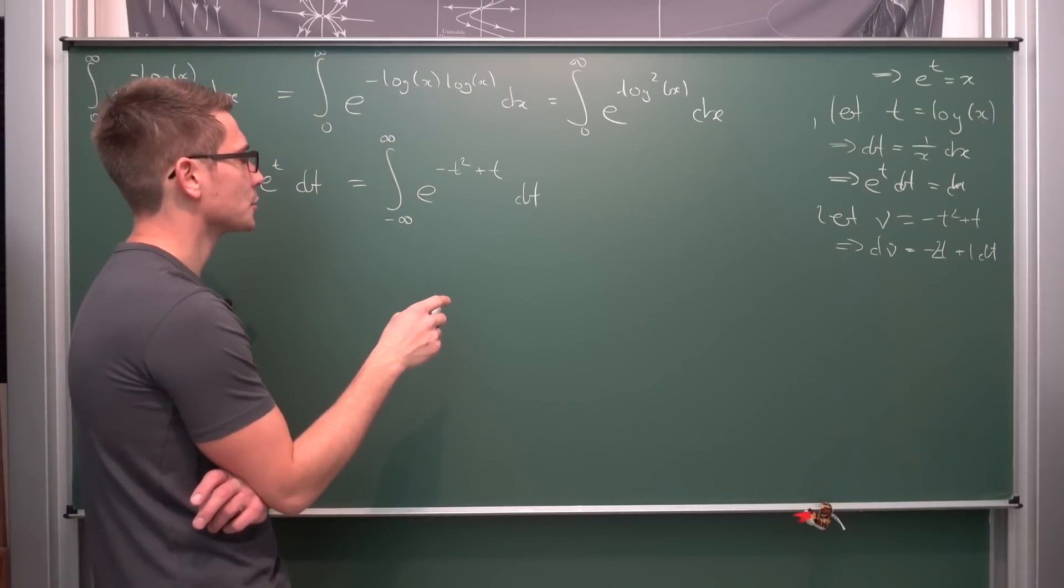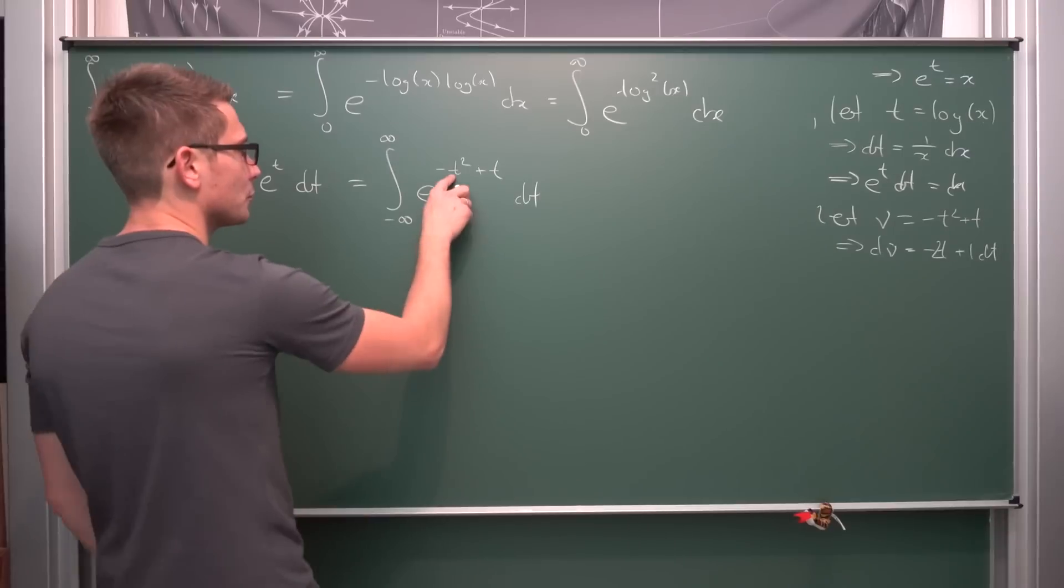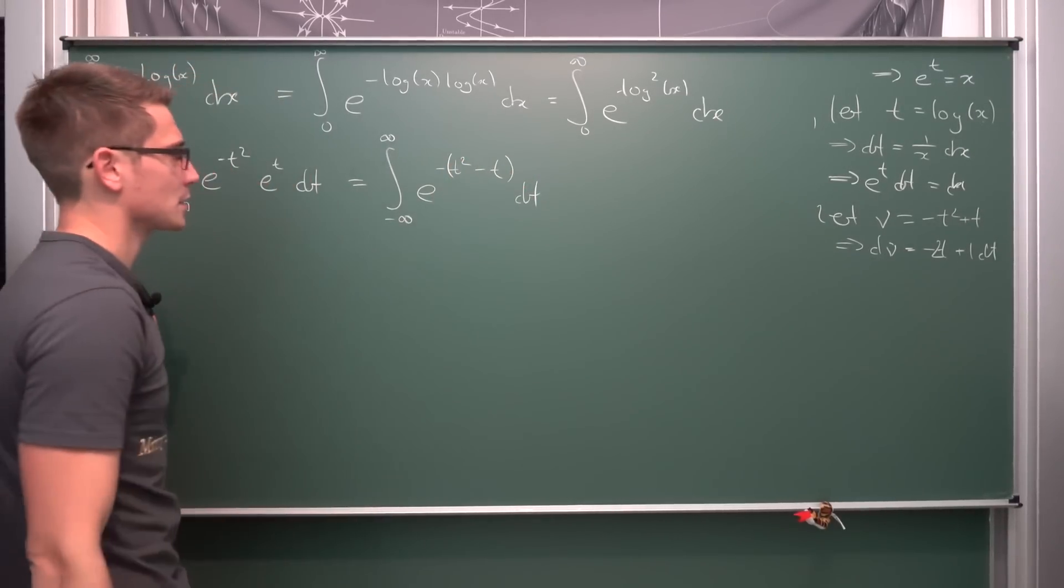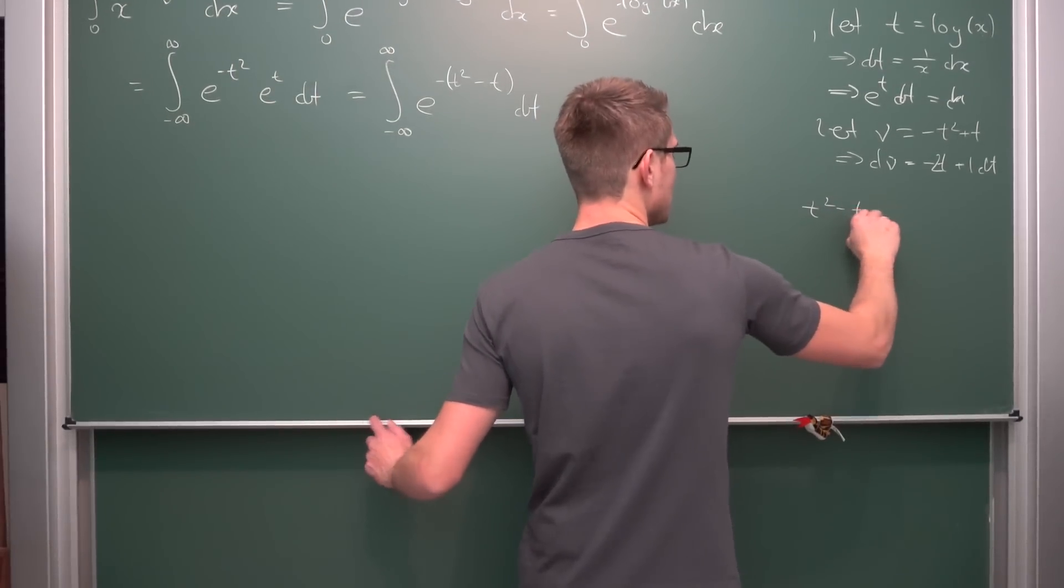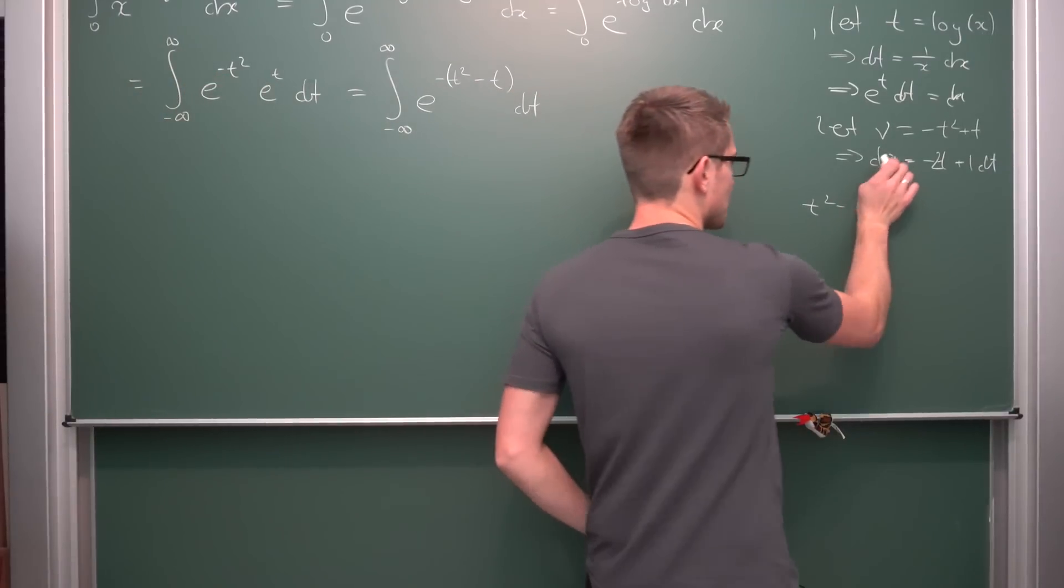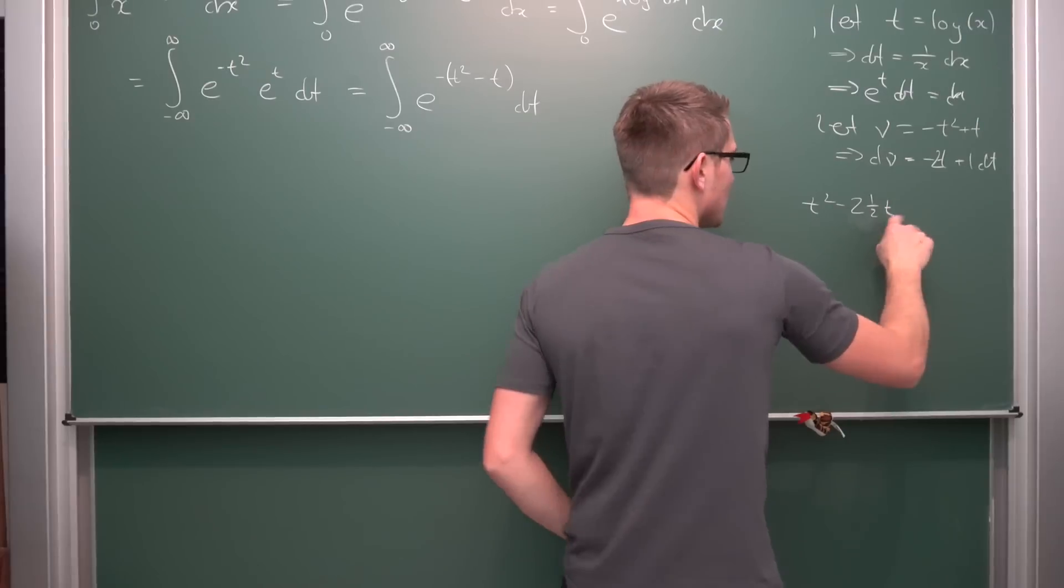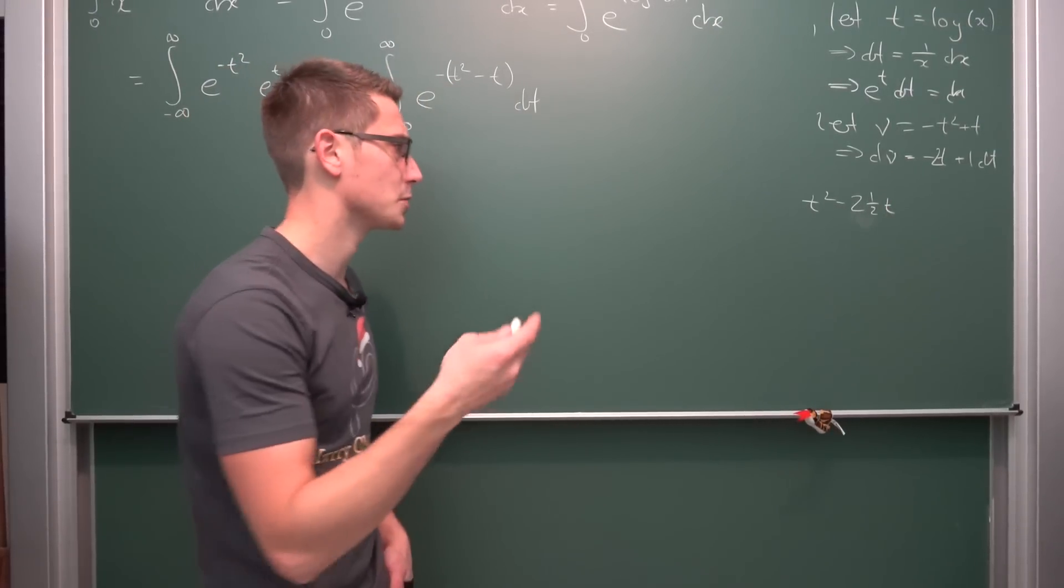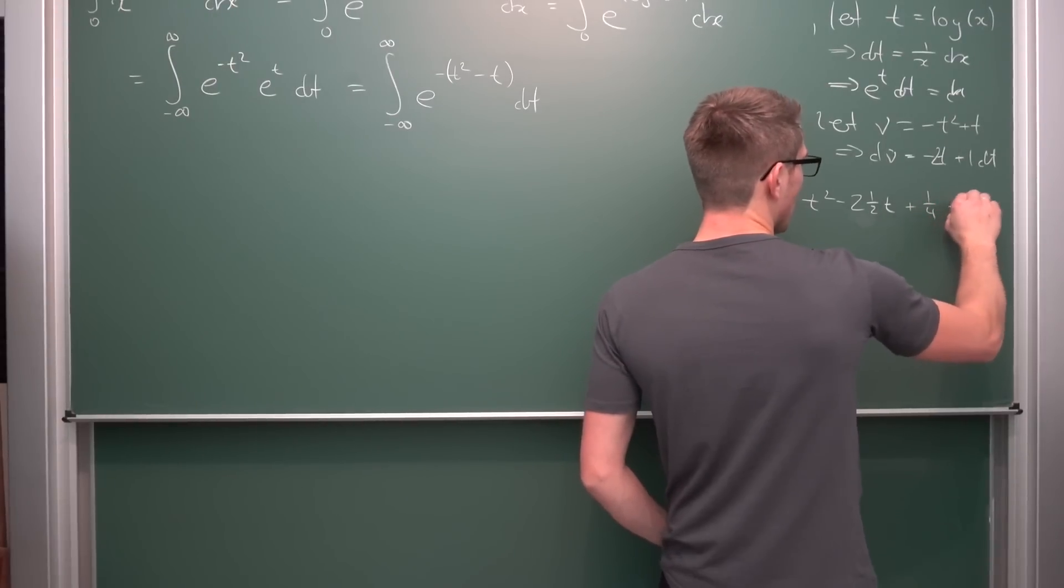But what we can do before we do this substitution is we can complete the square. If we factor out a negative sign here, we get t squared minus t. If we consider t squared minus t, then our middle part for the binomial theorem: we get 2 times 1 half t. What is missing for us to complete the square is 1 half squared, but we can just add it and subtract it again. So plus 1 quarter minus 1 quarter.